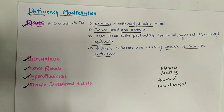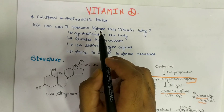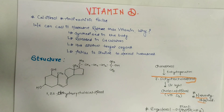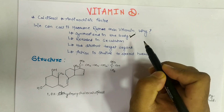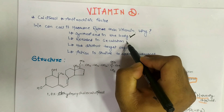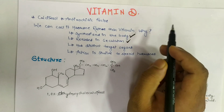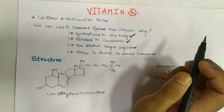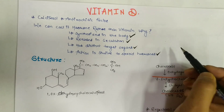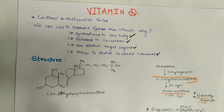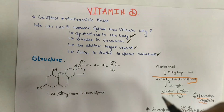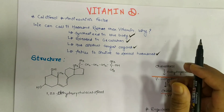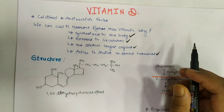There is also a condition called vitamin D-resistant rickets, where the disease does not respond to treatment with vitamin D. Vitamin D is also considered a hormone rather than a vitamin because it is synthesized in the body, released into circulation, and acts on different target organs — the kidney and liver — similar to steroid hormones. Please like and subscribe. Thank you for watching.